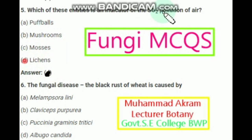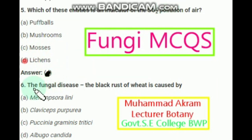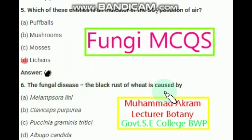The next question is: the fungal disease, the black rust of wheat, is caused by which organism? The right option is Puccinia graminis, option C.